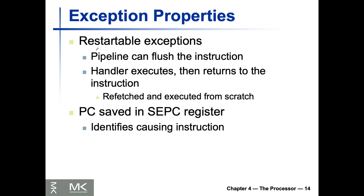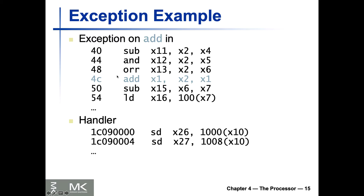On a case of restartable exceptions: if we decided to restart the failed operation, the pipeline can flush the instruction, the handler at the already-set address executes, and then returns to the instruction. The program counter saved at that specific failed instruction will identify the cause.